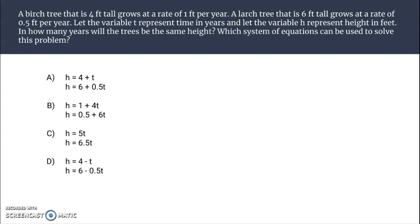Let's look at another example here where we're just identifying the system. A birch tree that is four foot tall grows at a rate of one foot per year. A larch tree that is six foot tall grows at a rate of 0.5 feet per year. Let the variable t represent time in years. Let the variable h represent height in feet. In how many years will the trees be the same height? Which system of equations can be used to solve the problem?